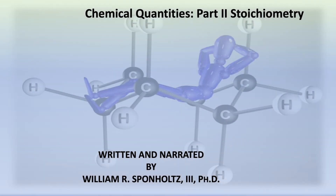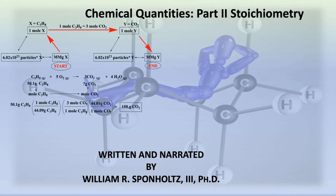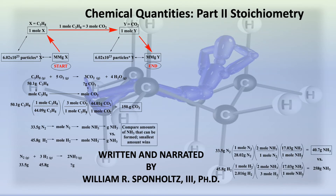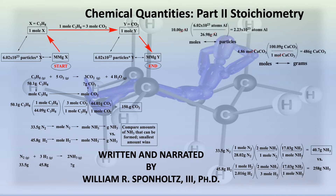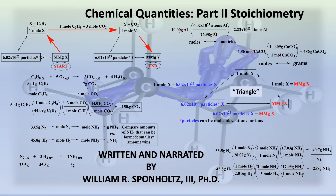Welcome to the second of two videos that will cover basic stoichiometric calculations as well as more advanced limiting reactant stoichiometric calculations. It is recommended that the student watch the first video that covers conversions between chemical quantities with the aid of the triangle. It will be assumed that the student is familiar with the triangle within this video.